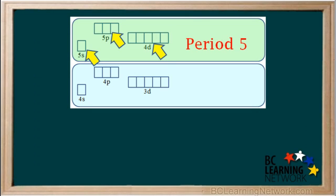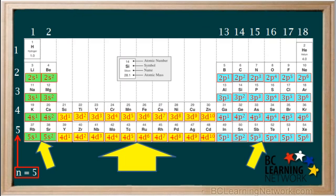Similarly, in period 5, we have 5s1 and 5s2, 4d1 to 4d10 and 5p1 to 5p6, as shown here in the fifth period on this periodic table.